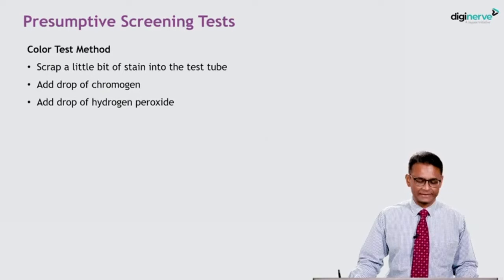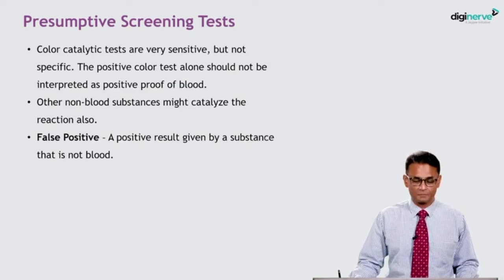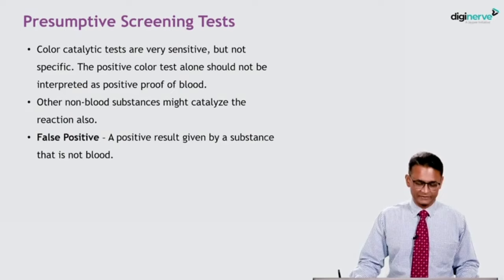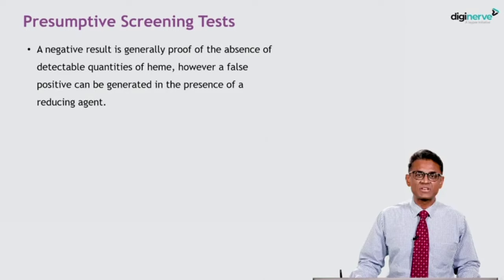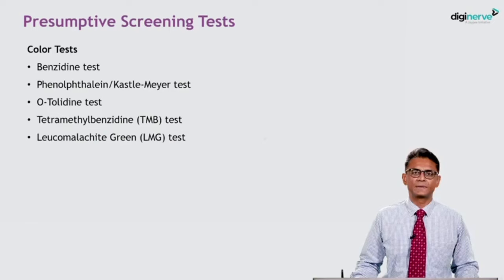How the color test is done: scrape a little bit of stain into a test tube, add a drop of chromogen, and add a drop of hydrogen peroxide. Color catalytic tests are very sensitive but not specific. A positive color test alone should not be interpreted as positive proof of blood, as other non-blood substances might also catalyze the reaction. A false positive is a positive result given by a substance that is not blood. A negative result is generally proof of absence of detectable quantities of heme. However, a false positive can be generated in the presence of a reducing agent.